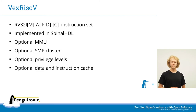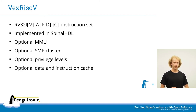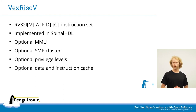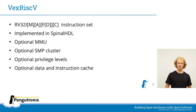The VexRISC-V implements the 32-bit RISC-V instruction set and is highly configurable via plugins. It is implemented in SpinalHDL, which is a Verilog code generator written in Scala. You can generate the Verilog code by running the generator with SBT and the intended configuration - for example, you can add an MMU, build it as an SMP cluster, enable and disable privilege levels, and add or remove the data and instruction cache. The VexRISC-V is optimized for FPGA usage without any vendor-specific primitives, so we can use it on the ECP5 with an open source toolchain.